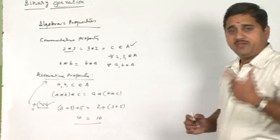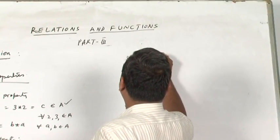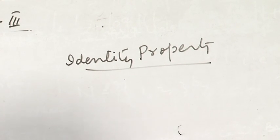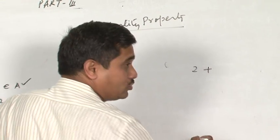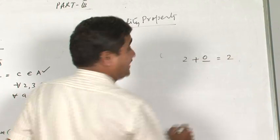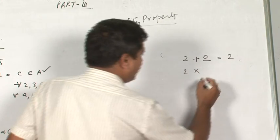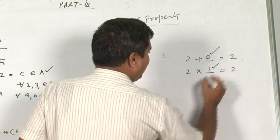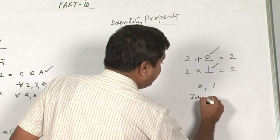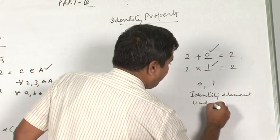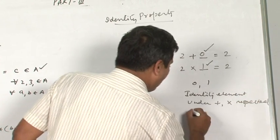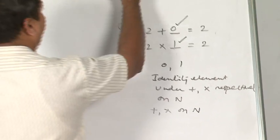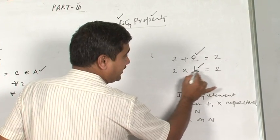After commutative and associative properties, we have the identity property — a very important property. Before the formal details, consider: what shall be added to 2 to get 2 back? The answer is 0. And under multiplication on the set of natural numbers, what shall be multiplied with 2 to get 2 back? The answer is 1. These elements 0 and 1 are called identity elements under addition and multiplication respectively on N.